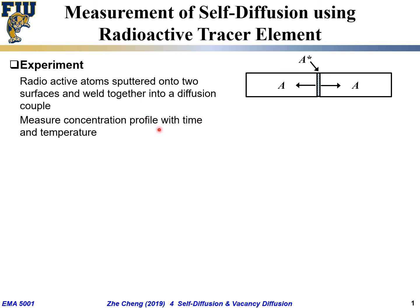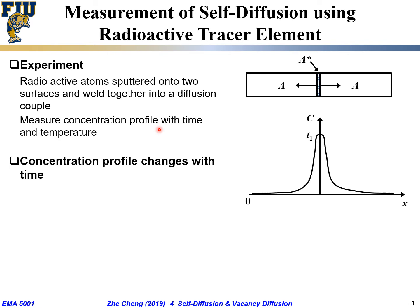Concentration profile means the change of concentration with location or distance. The concentration profile initially — at a very short period of time — as a function of location, starts as a very narrow distribution. And over time, from t1 to t2 to t3, the peak becomes lower and extends out deeper and shallower.